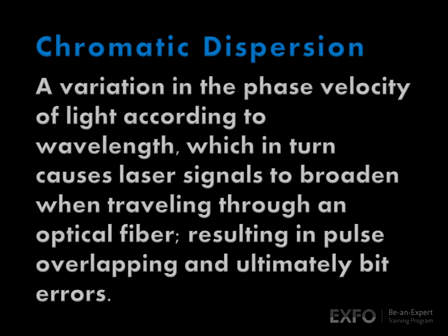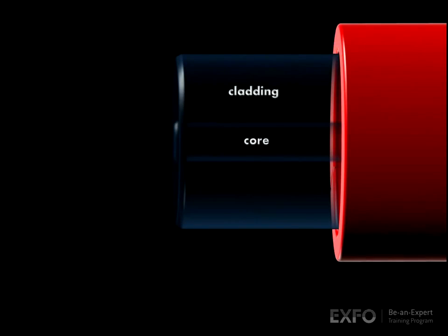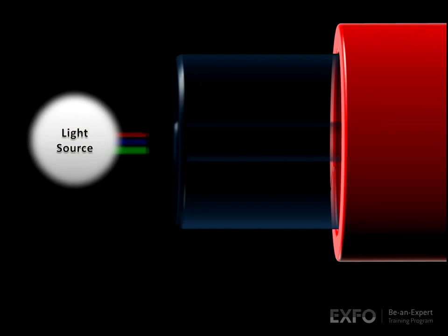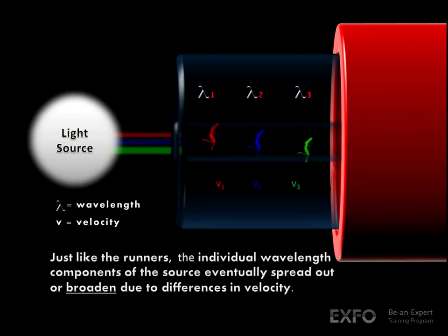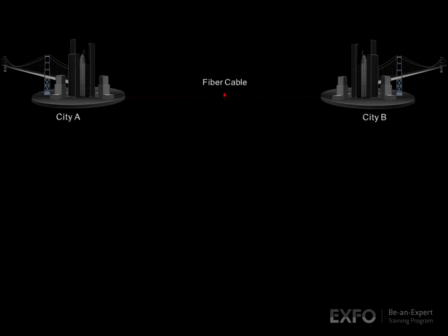Chromatic dispersion: a variation in the phase velocity of light according to wavelength, which in turn causes laser signals to broaden when traveling through an optical fiber, resulting in pulse overlapping and, ultimately, bit errors. So, let's take a look.